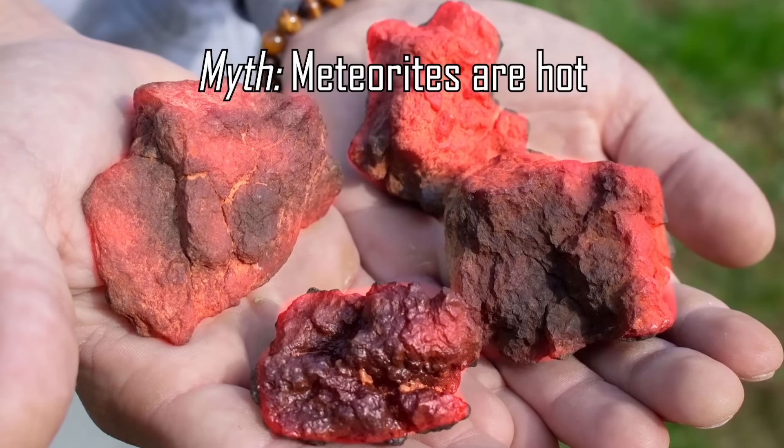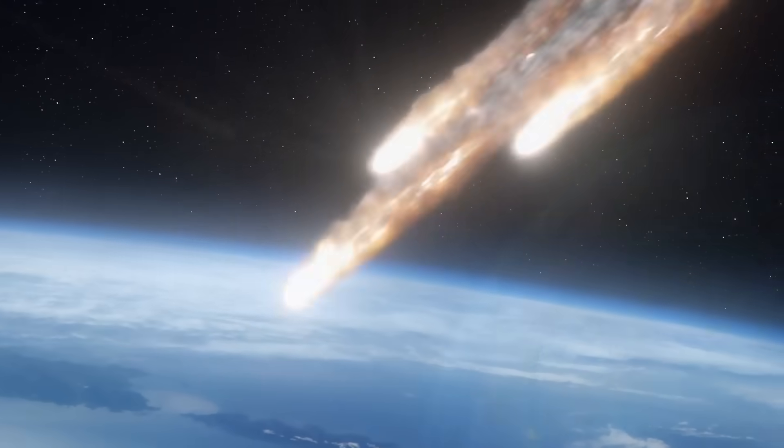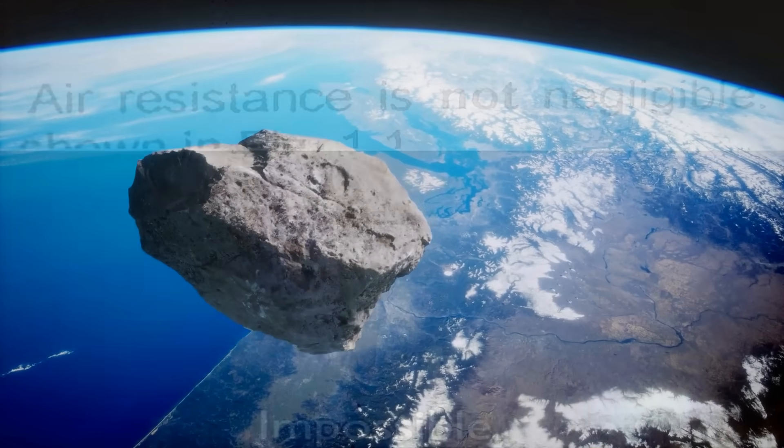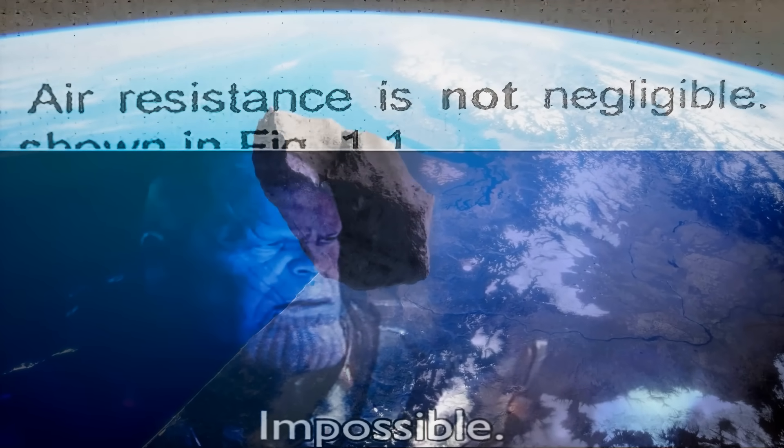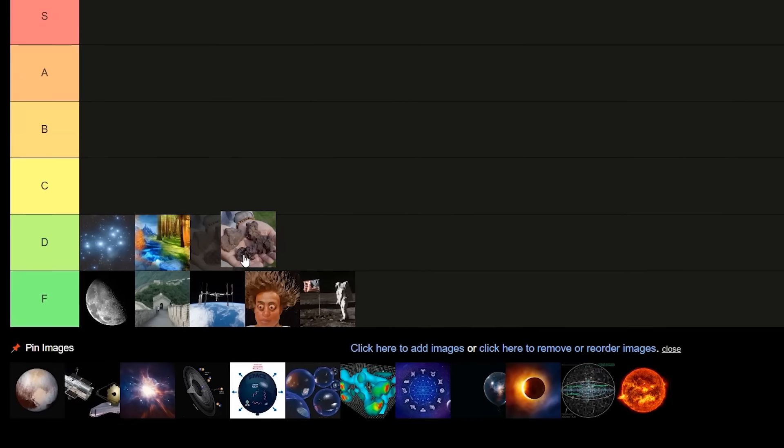Meteorites are hot when they land. Most are ice cold. The fiery trail you see in Hollywood happens only at about 20 kilometers above the surface until the atmospheric friction slows it down. Afterwards, it's just a cold rock plopping on the ground. No smoldering fireballs from hell.